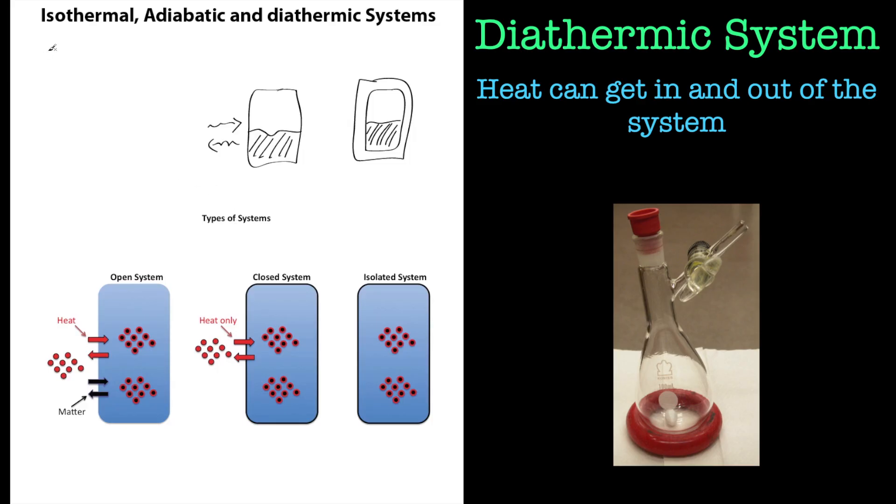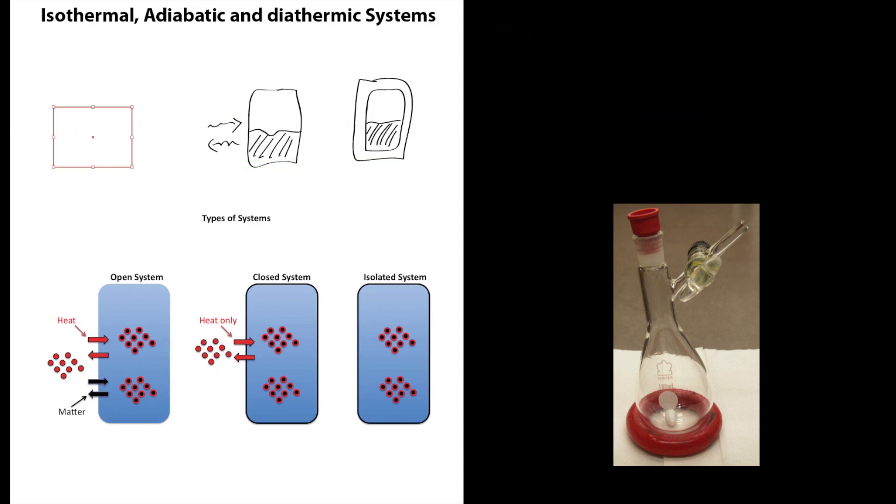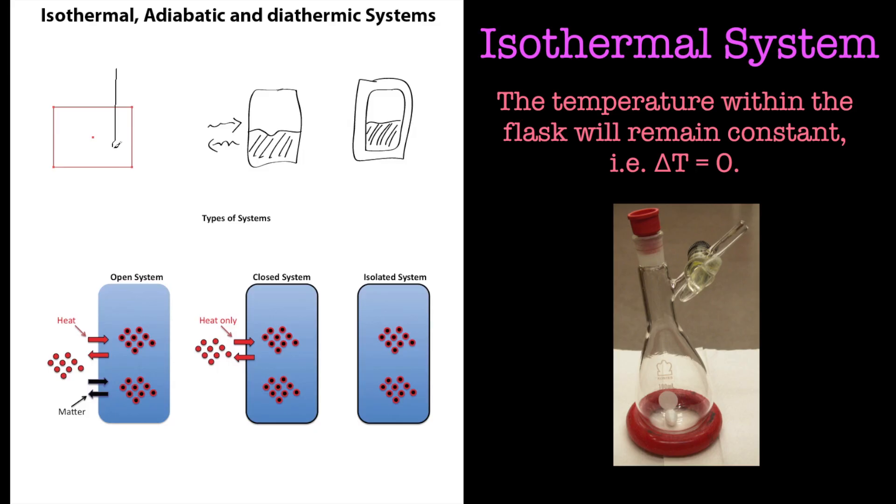So if we look at an example for an isothermal process—if we look at isothermal processes, let's just get a box up. So this is our reaction vessel and we'll stick a thermometer in there.